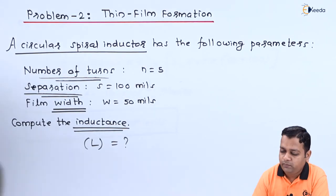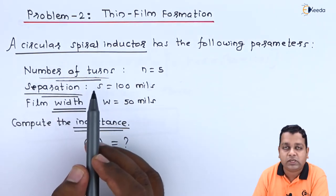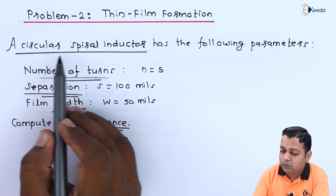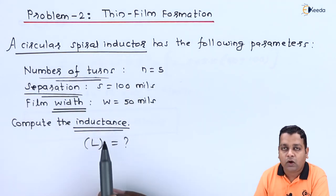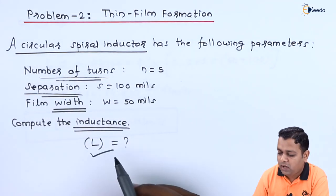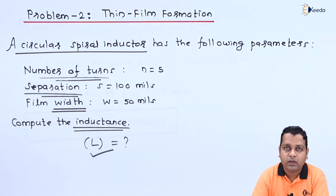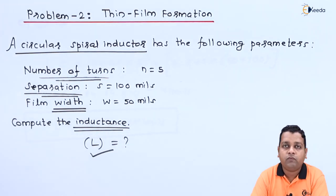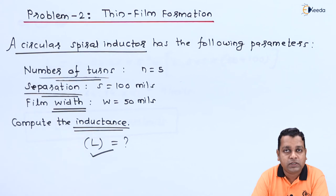This was our problem statement corresponding to the dimensions and number of turns for circular spiral inductor, and now we are successful in determining the value of inductance. I hope the problem was straightforward. The previous one was for resistive type thin film formation, this is for inductive type thin film formation.